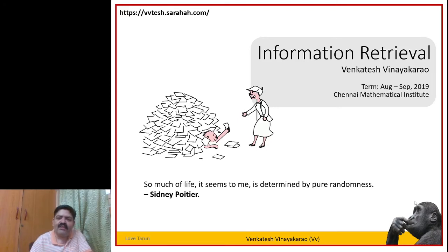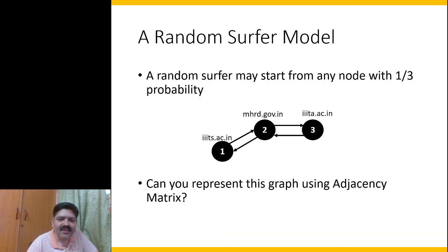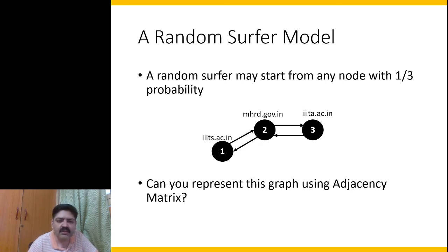Hello and welcome to this session on information retrieval. Today we shall take a look at the popularity of web pages. I'll start with a random surfer model. A random surfer may start from any node with equal or uniform probability. So let's say we have three nodes: one, two, and three. Let's assume each of these nodes are some websites.